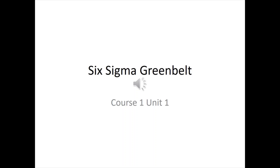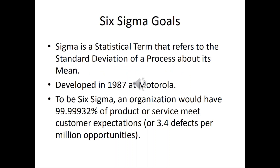Welcome to Six Sigma Greenbelt. This is the first unit of the first course. So what is Six Sigma? Six Sigma is a statistical term that refers to standard deviation — in this case we're talking about a process — specifically a standard deviation about the process mean.